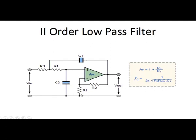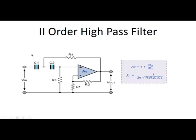For the second order high pass filter, the passive components are reversed: where resistors were in the low pass filter, capacitors are connected, and where capacitors were, resistors are placed. The feedback network and non-inverting configuration of the operational amplifier remain the same. The gain is 1 plus the feedback resistor divided by the input resistor, and the cutoff frequency is 1 by 2-pi times the square root of R3·R4·C1·C2.